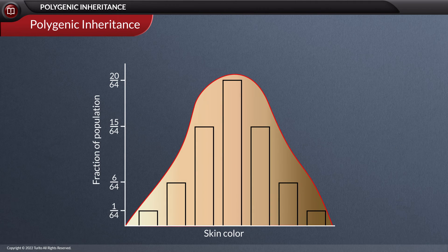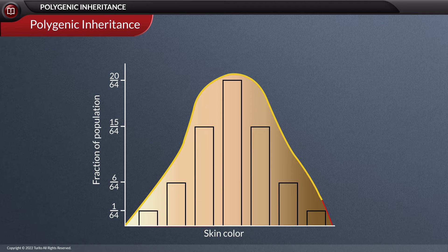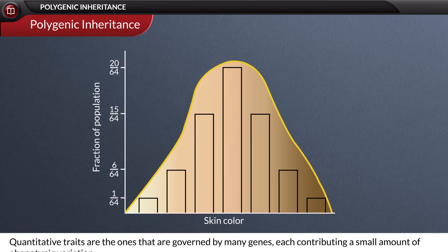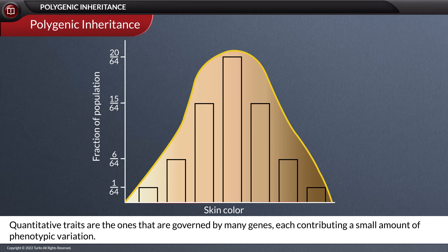Since skin color can be estimated phenotypically, it can be estimated as a quantitative inheritance, which can be represented by a bell-shaped normal distribution curve. Quantitative traits are the ones governed by many genes, each contributing a small amount of phenotypic variation, and this type of inheritance is quantitative inheritance.